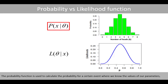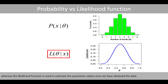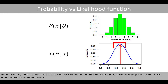The probability function is used to calculate the probability for a certain event where we know the values of our parameters, whereas the likelihood function is used to estimate the parameter values once we have obtained the data. In our example, where we have observed four heads out of eight tosses, we see that the likelihood is maximal when p is equal to 0.5. We would therefore estimate p to be 0.5.